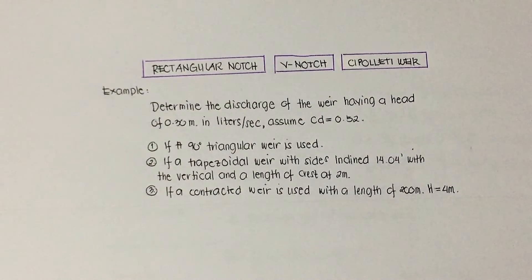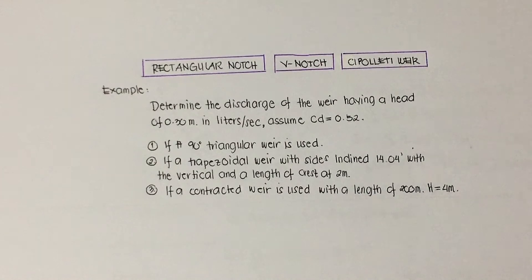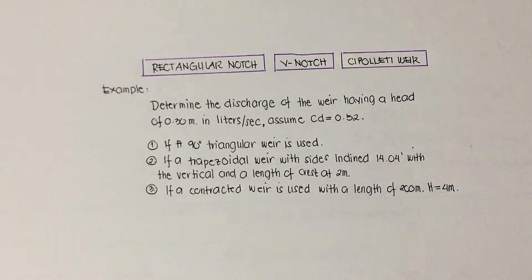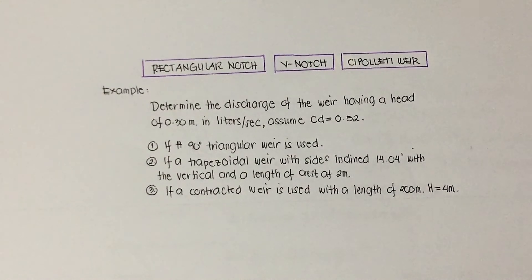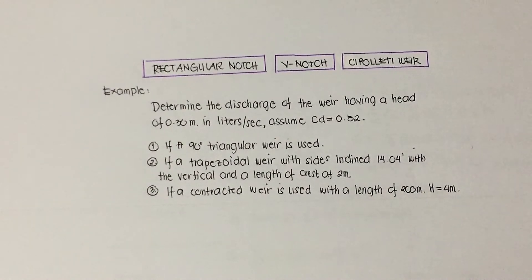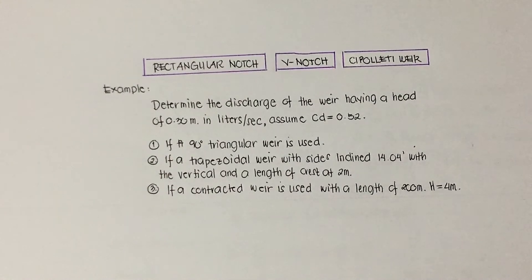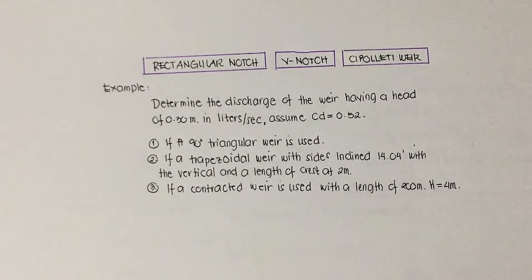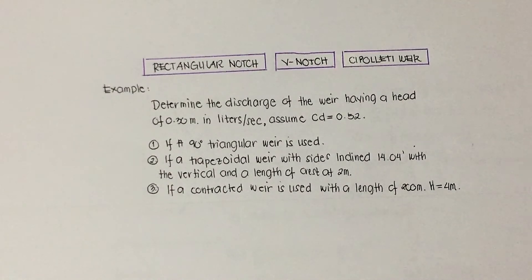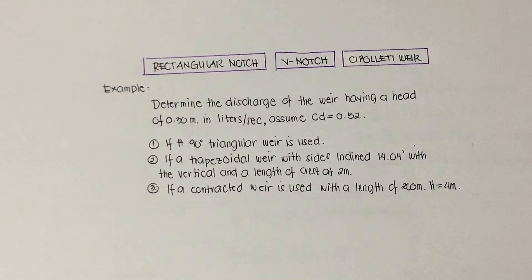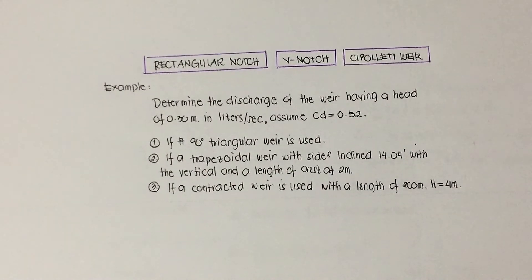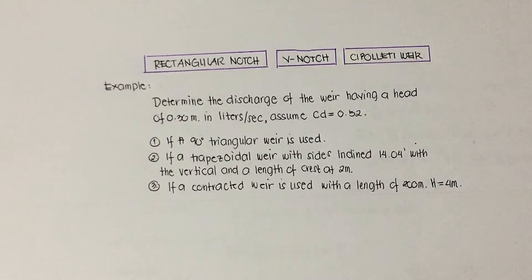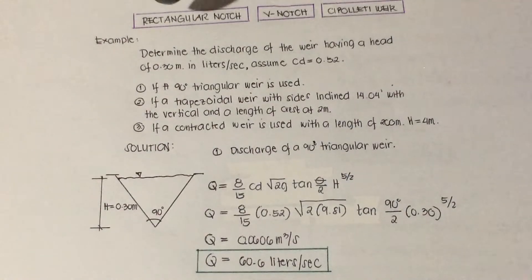Let's have an example for the flow measurement in channels using the three types of weirs. Determine the discharge of the weir having a head of 0.30 meters in liters per second, assuming a coefficient of discharge equal to 0.52. Case one: a 90-degree triangular weir is used. Case two: a trapezoidal weir with sides inclined at 14.04 degrees with the vertical and a length of crest of 2 meters. Case three: a contracted rectangular weir with a length of 200 meters and a height of 4 meters.